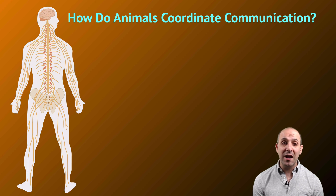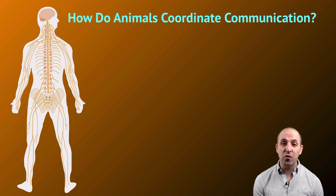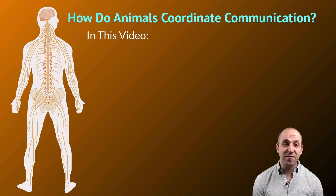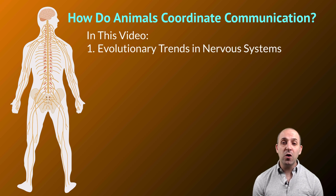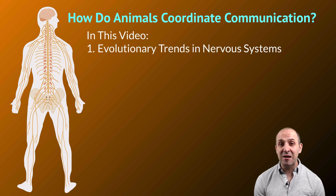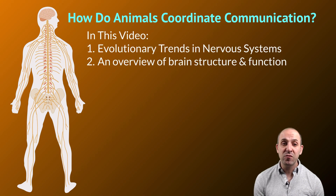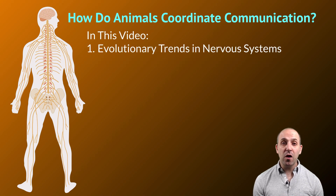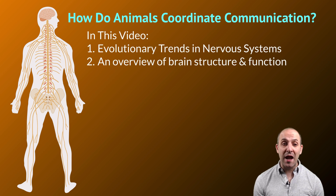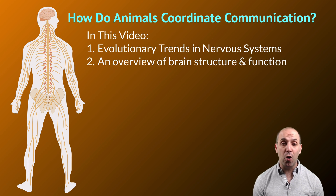The question we'll be answering is: how do animals coordinate their communication? In this video, we'll be talking about evolutionary trends in nervous systems, and we'll talk a little bit about brain structure and function in a very broad sense.